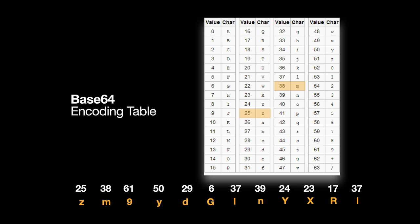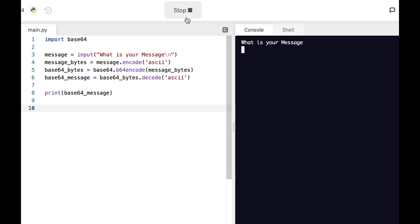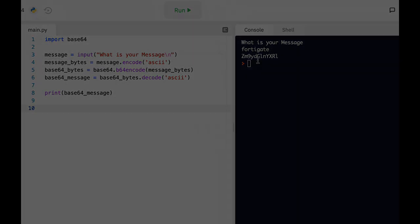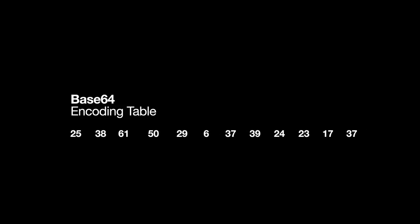Let's do it using a Python script I actually wrote and check it out. Let's run the script. What is your message? My message is F8gate, and it's being converted into ZM9YD — the same as we did manually using our Base64 encoding table.